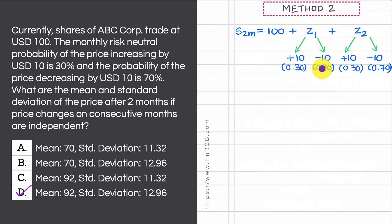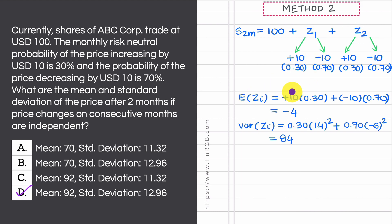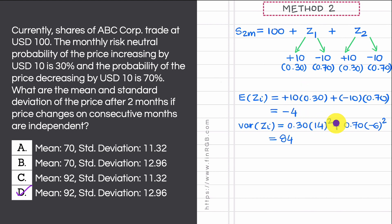We can quickly calculate the expected value and variance of each Z. The expected value of each Z is the probability-weighted average: 10 × 0.3 + (−10) × 0.7 = −4. The variance of each Z is 0.3 × (10 − (−4))² + 0.7 × (−10 − (−4))² = 0.3 × 14² + 0.7 × (−6)² = 84.